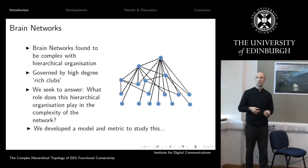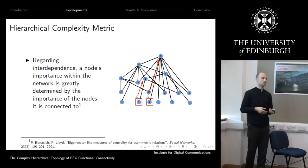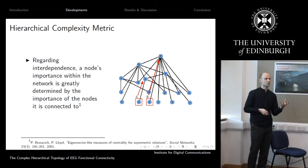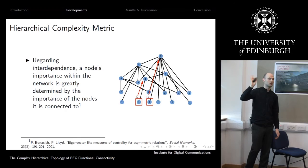When looking at graph topology, a key idea is that a node is not just important if it's highly connected, but also depends on which nodes it's connected to. If it's connected to important nodes, it itself seems to be important. For example, this node connected to one of degree 9 is considered more important than a node of the same degree connected to one of degree 4, because it's connected to the more important node.